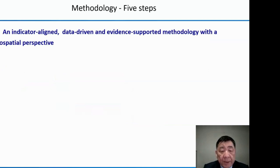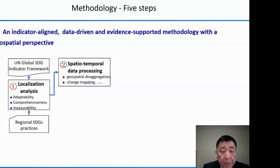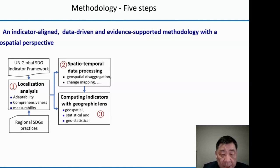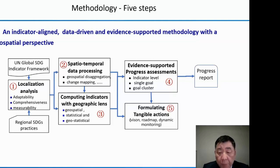The methodology has five steps. First, the United Nations Global SDG Indicator Framework was localized according to its adaptability, complexity, comprehensiveness, and measurability. Then spatial-temporal data were collected and processed. The third step is to calculate all selected indicators with geospatial information — here we use not only geospatial information but also statistical data. Evidence-supported multi-progress assessments were organized at the indicator level, single goal level, and goal-cluster level, from which we formulate a progress report. Then we define tangible actions according to the progress report to formulate a five-year action plan.